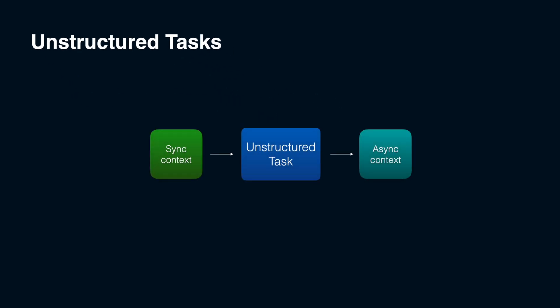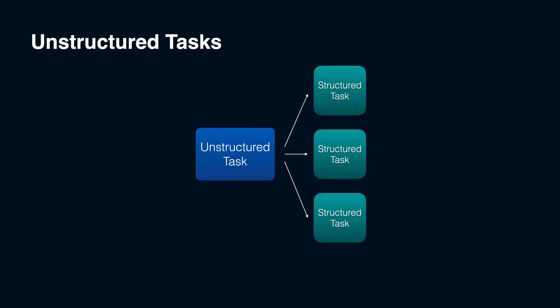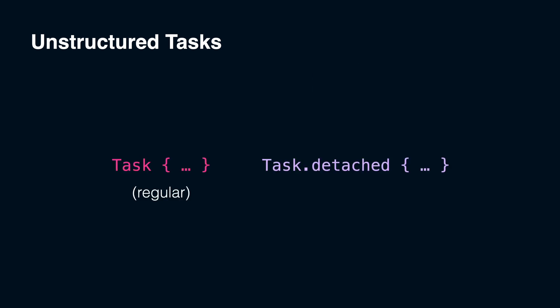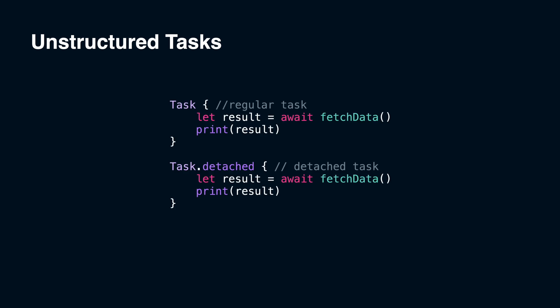Unstructured tasks are usually used as a bridge between sync and async contexts. If we create some structured child tasks inside of unstructured tasks, the unstructured task will be a root task in the task tree and parent task for structured tasks. Unstructured tasks are represented by regular and detached tasks — we'll call it regular just to give it a distinctive name. The lifecycle of unstructured tasks is not bound to the local scope or a single closure, like async let or task group. When execution leaves local scope, the unstructured task will simply continue its execution. The difference between regular and detached tasks will be discussed in more detail later, but a regular task inherits the execution context while a detached task does not. In most cases, using a regular task is the better choice.